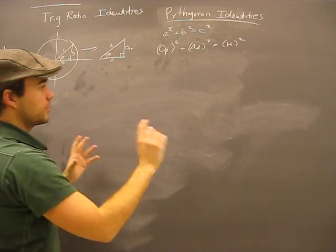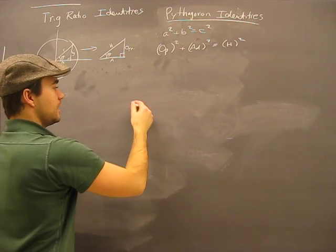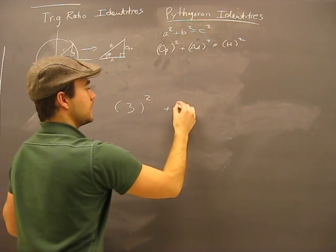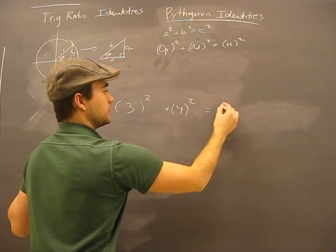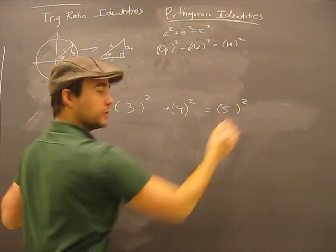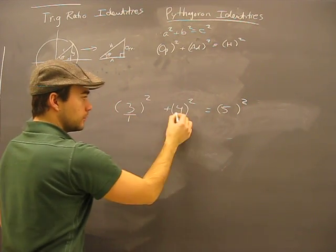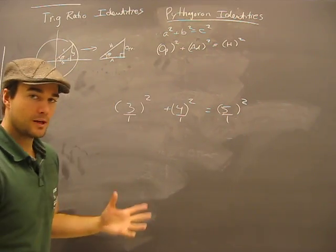Now what I'm going to do is draw attention to this one thing here. If I had, for example, 3² + 4² = 5², which we know is true, that's a perfect triangle, I can also say (3²/1) + (4²/1) = (5²/1). Would you agree with that?